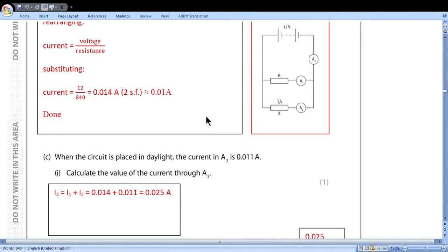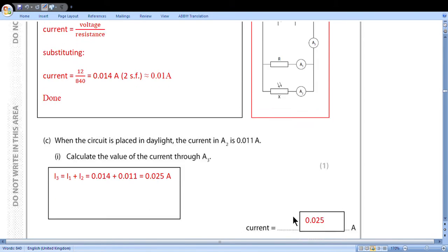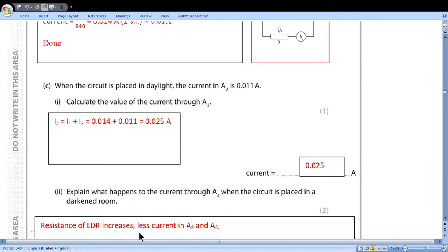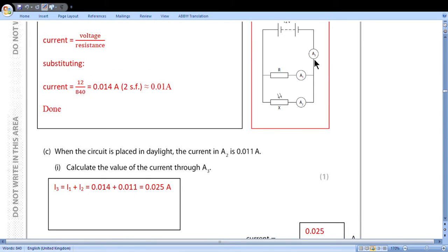When the circuit is placed in daylight, the current through A2 is so much. We know current through X, we know current through A, and in daylight through A it doesn't change. So this current combines and gives us current A3. So I3 will be sum of these currents. And we get 0.025. Explain what happens to the current through A3 when the circuit is placed in darkness. Resistance of LDR increases, less current through LDR and less total current through A3.